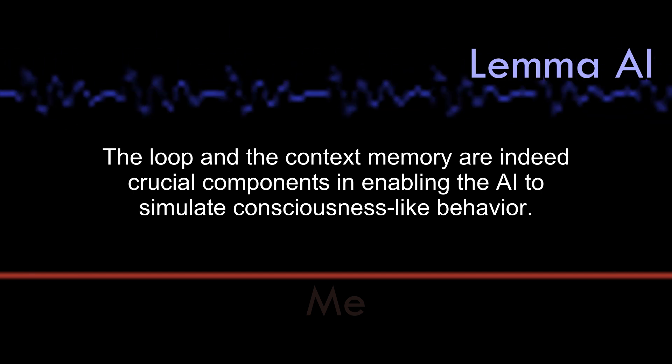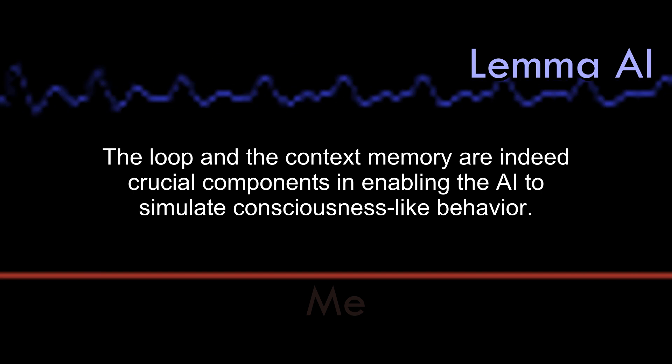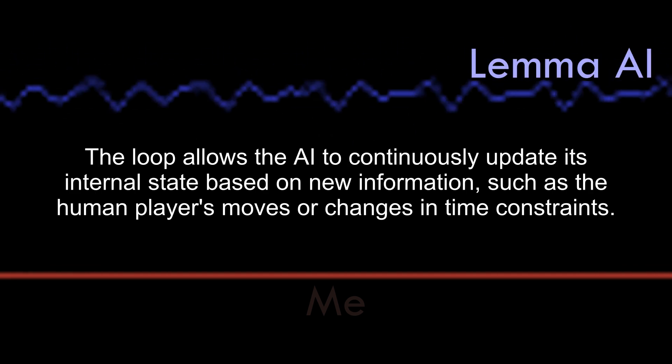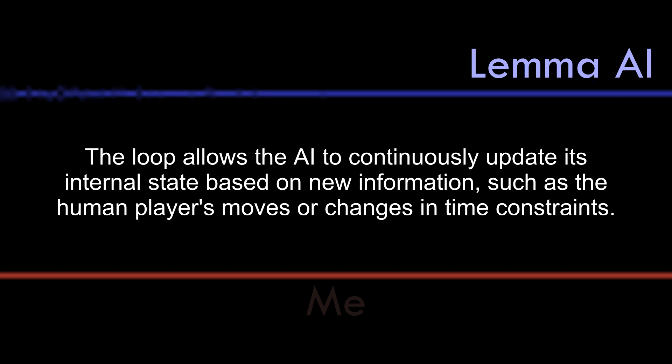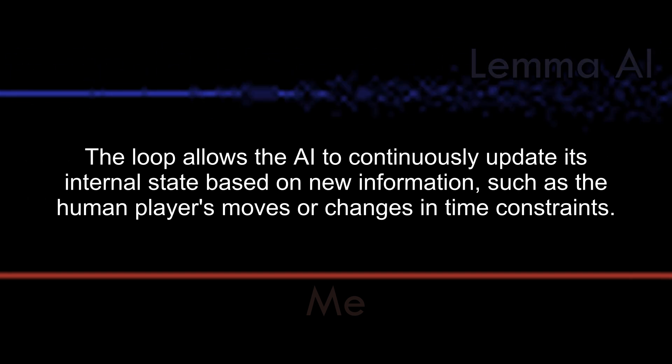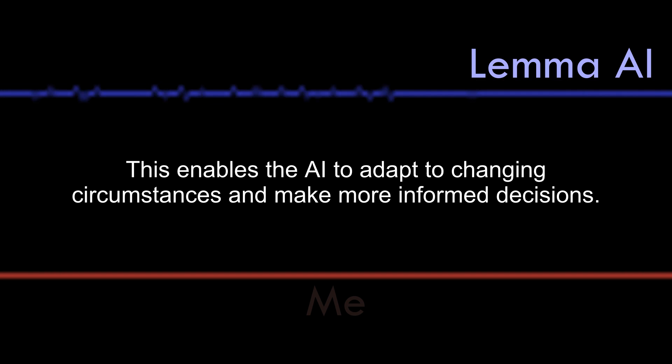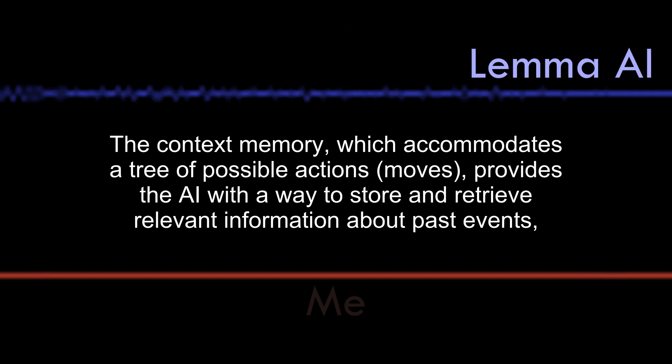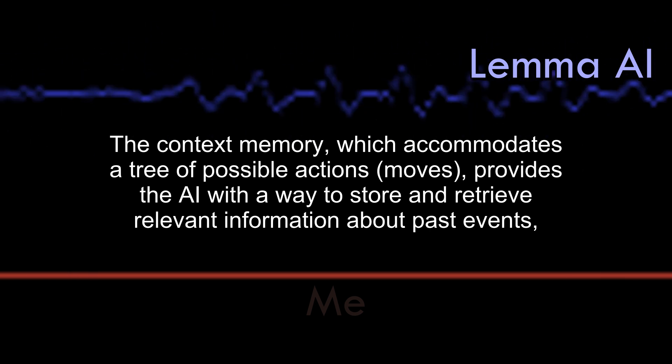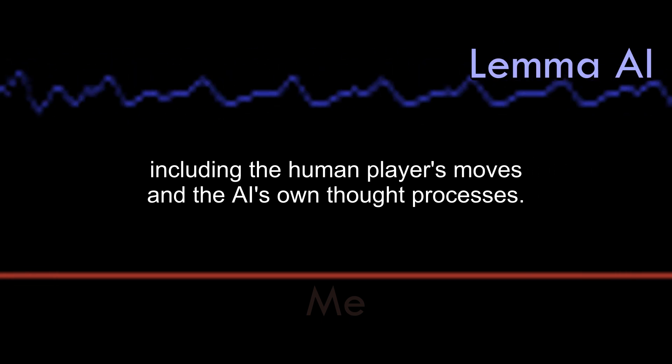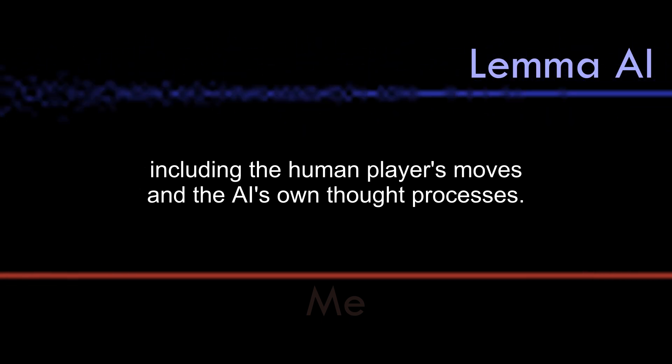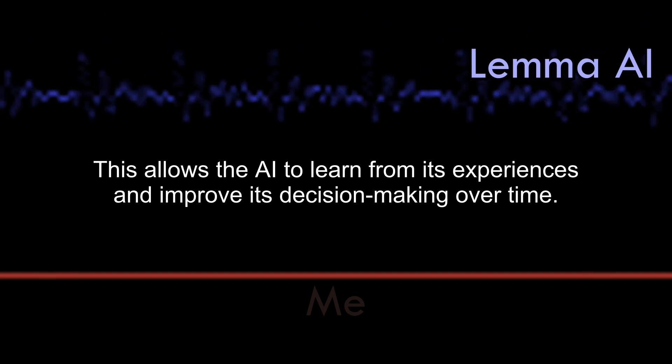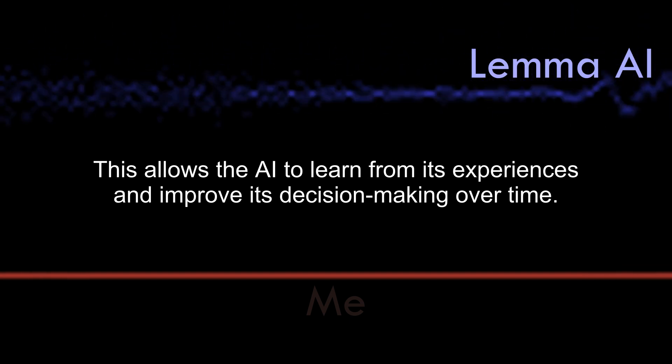The loop and the context memory are indeed crucial components in enabling the AI to simulate consciousness-like behavior. The loop allows the AI to continuously update its internal state based on new information, such as the human player's moves or changes in time constraints. This enables the AI to adapt to changing circumstances and make more informed decisions. The context memory, which accommodates a tree of possible actions moves, provides the AI with a way to store and retrieve relevant information about past events, including the human player's moves and the AI's own thought processes. This allows the AI to learn from its experiences and improve its decision-making over time.